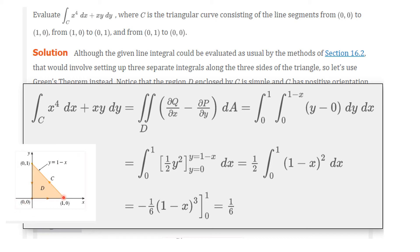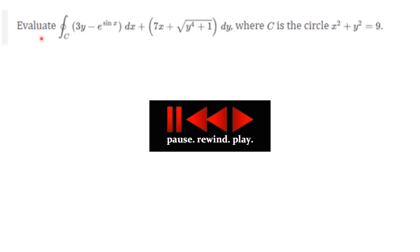You see, if you were doing this directly, you would have to parametrize each of the three segments and compute three line integrals instead of one double integral. Here's another problem. Evaluate the line integral around the closed curve C of (3y − eˢⁱⁿˣ) dx plus (7x + √(y⁴ + 1)) dy, where C is the circle x² + y² = 9. This would be pretty messy to calculate without Green's Theorem.